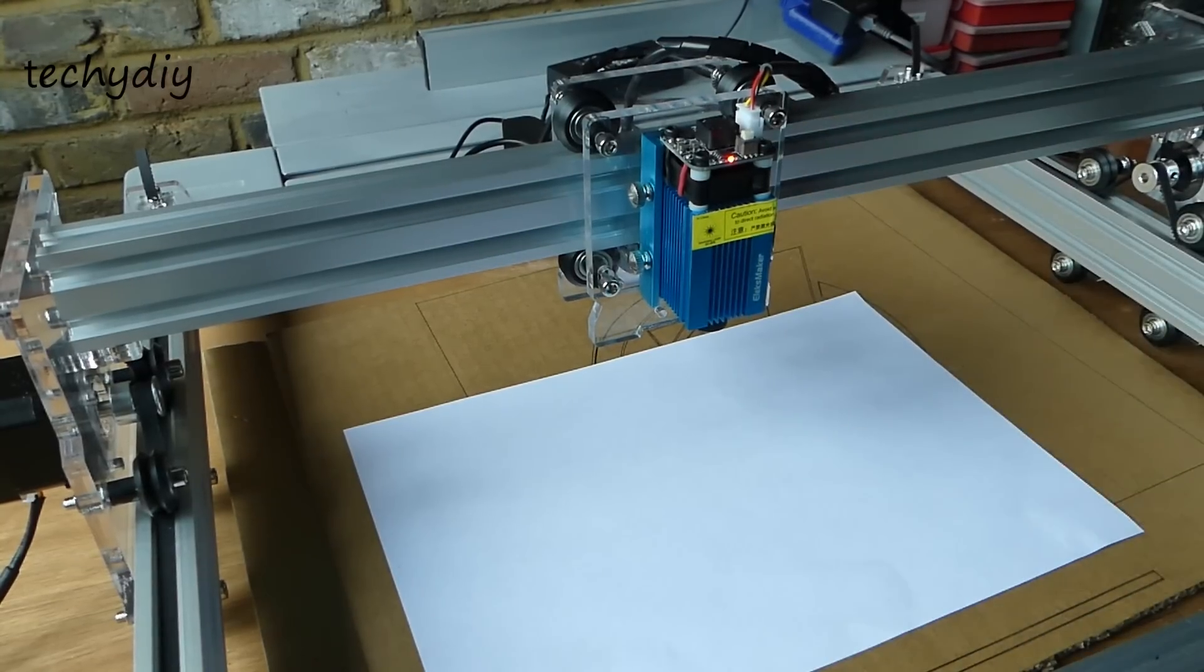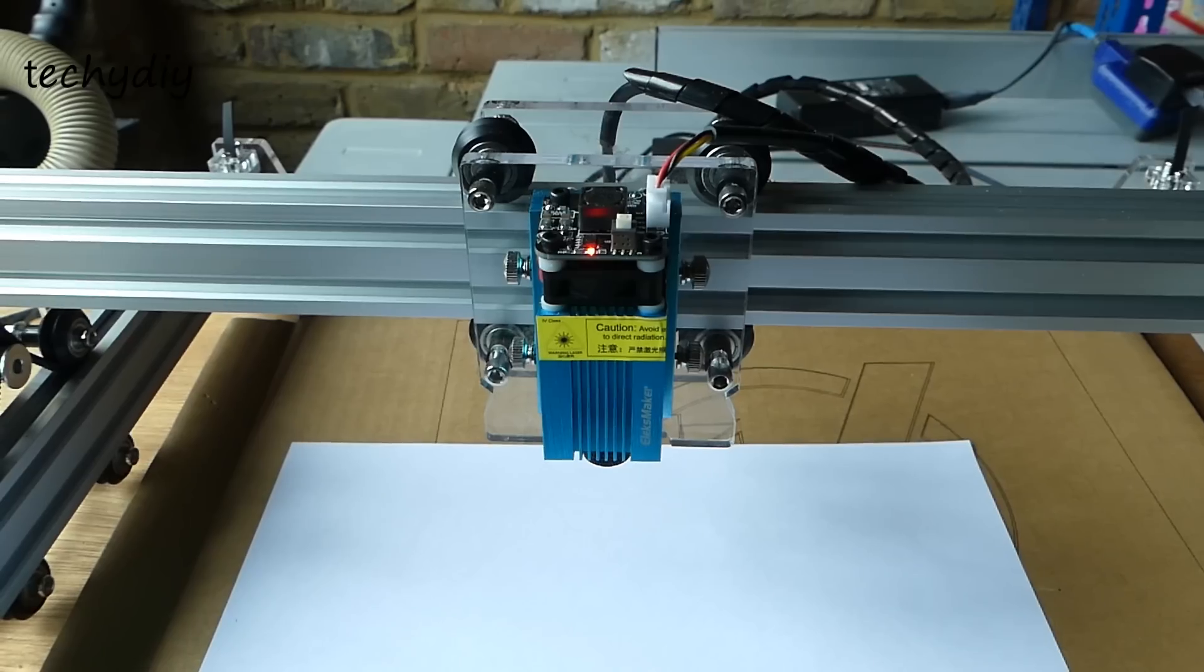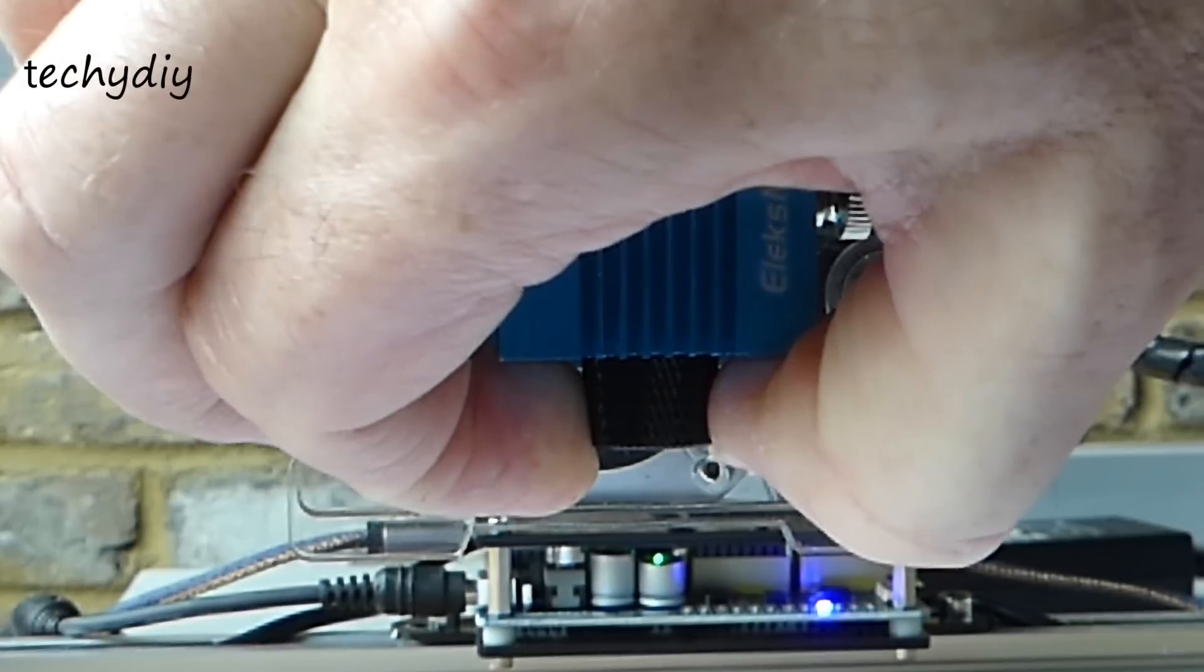Before plugging in the power supply, we need to put on the safety glasses. Then we can focus the laser using the weak power mode, turning the adjustment ring to bring the laser to a sharp point.